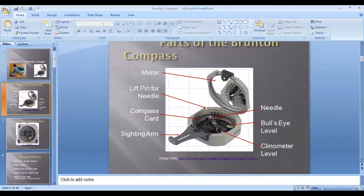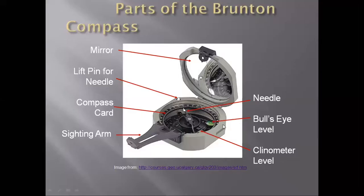I will go into the details. This is the sighting arm of the Brunton, and these are the sides of the Brunton — these two are the sides. We use these sighting arms and these sides to measure the orientation of various features.